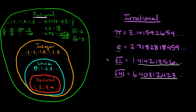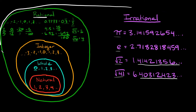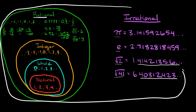All these rational numbers and all these irrational numbers can be grouped together in the biggest classification, which would be real numbers. Real numbers — that is the biggest classification of numbers.